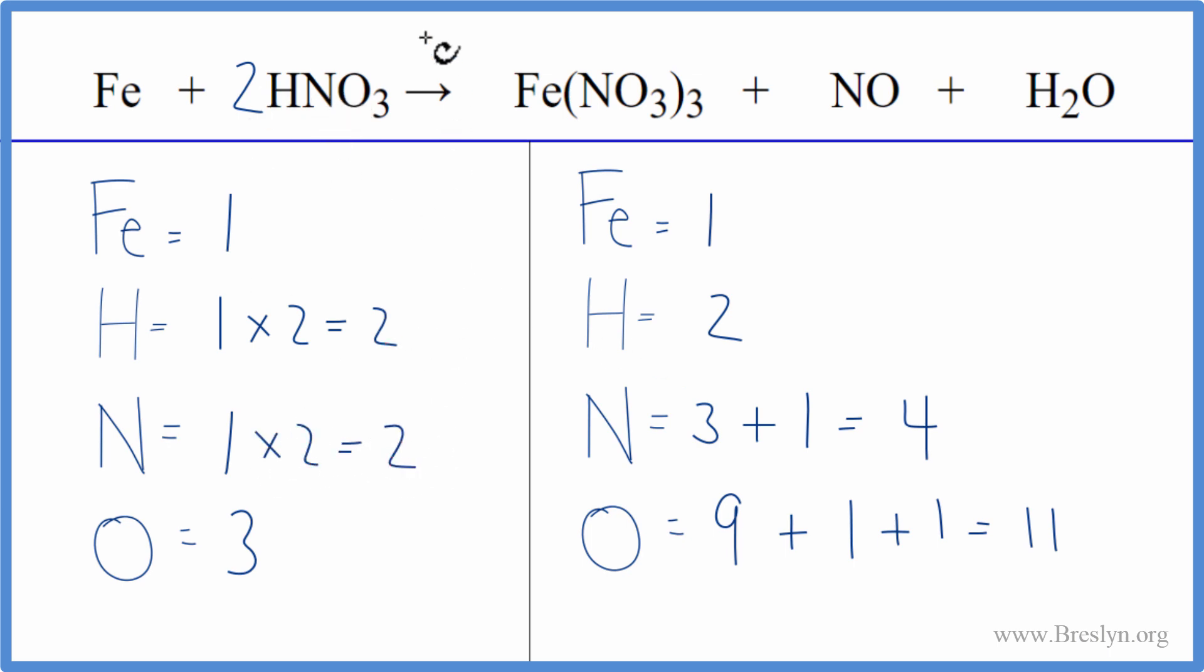One times two gives us two nitrogens. And three times two gives us six oxygens.